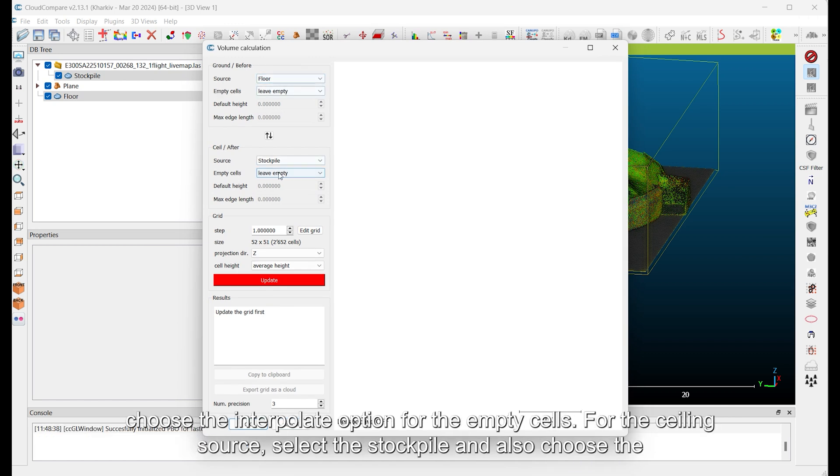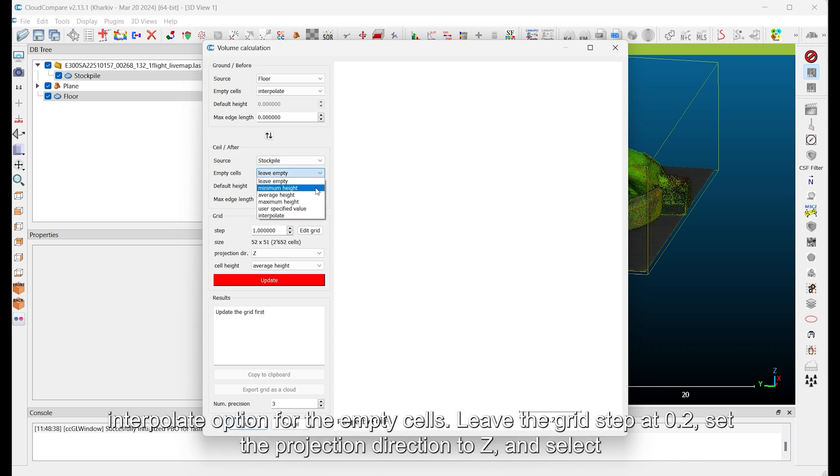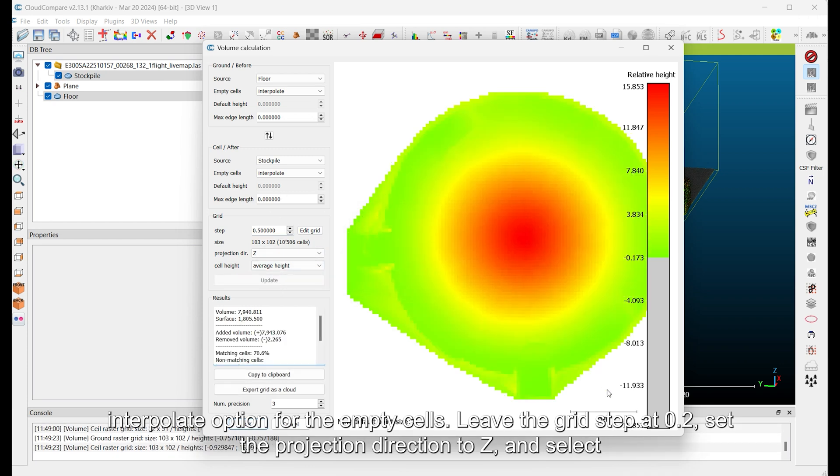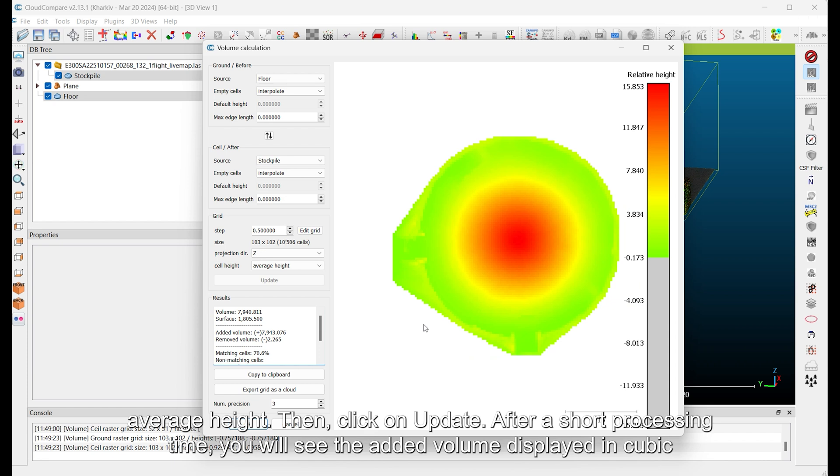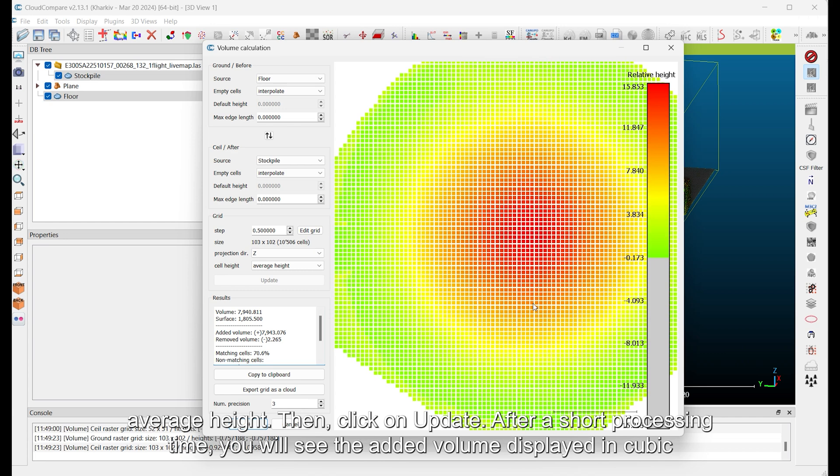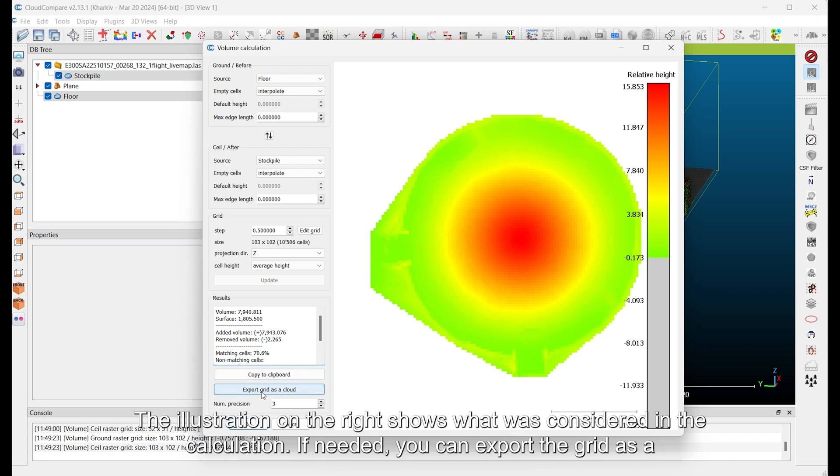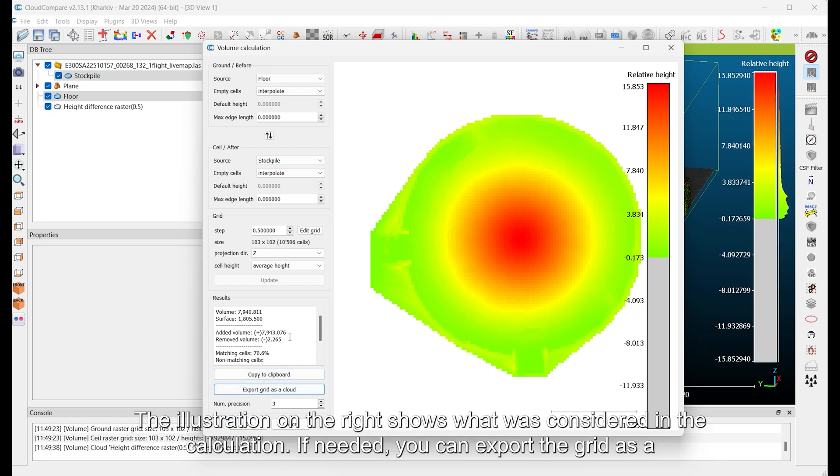For the ground, select the floor and choose the interpolate option for the empty cells. For the ceiling source, select the stockpile and also choose the interpolate option for the empty cells. Leave the grid step at 0.2, set the projection direction to Z, and select Average Height. Then, click on Update. After a short processing time, you will see the added volume displayed in cubic meters. The illustration on the right shows what was considered in the calculation.